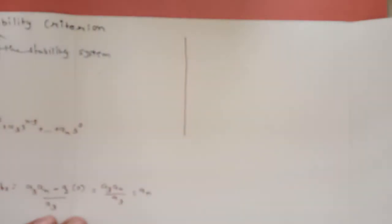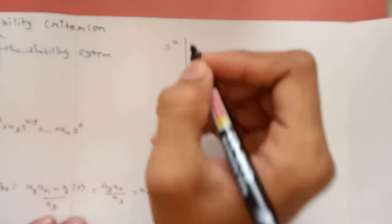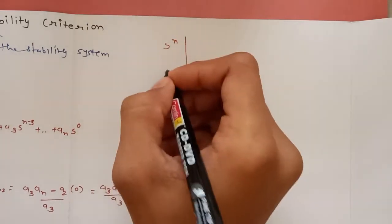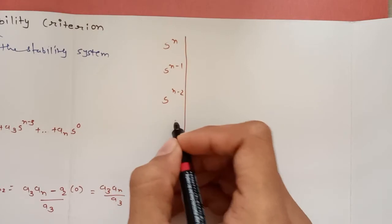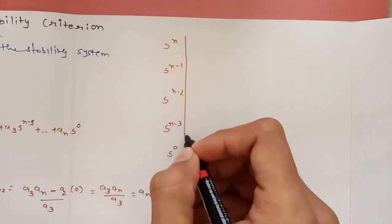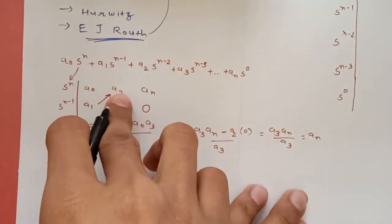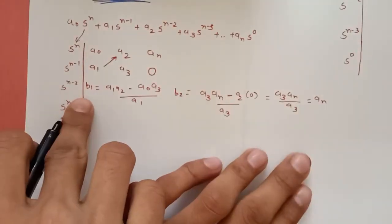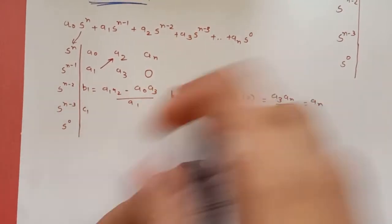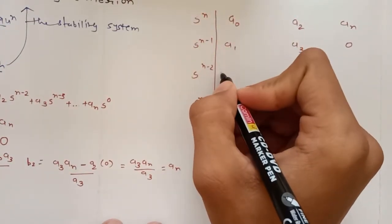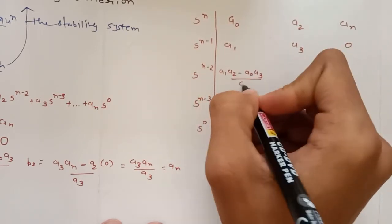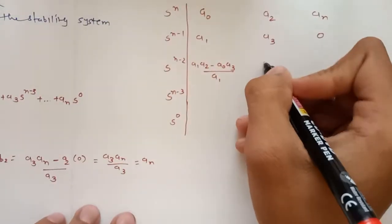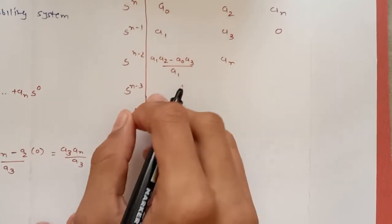To understand this properly, let me re-arrange the array. The rows are: s^n with coefficients a0, a2, an; s^(n-1) with coefficients a1, a3, 0. Then b1 = (a1·a2 − a0·a3) / a1, and b2 = an.